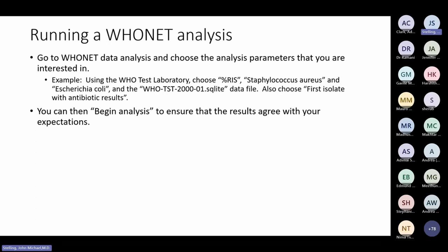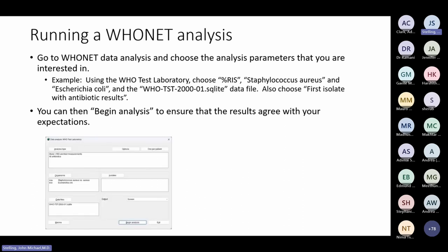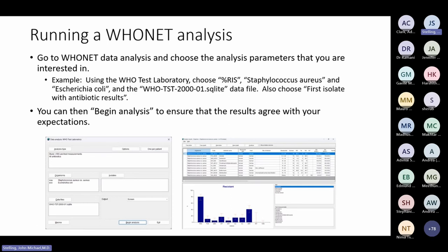The first slide here is how do I run a Hoonet analysis — not yet about macros, just how to simply run one. You start Hoonet, go to the data analysis routine, choose the analysis features you want, and then begin your analysis. As an example, I will choose the WHO test laboratory, choose the analysis percent RIS for Staph aureus and E. coli, choose the one month of sample data distributed with Hoonet from January 2000, and choose the feature 'first isolate with antibiotic results'. After clicking begin analysis, you will see the results.